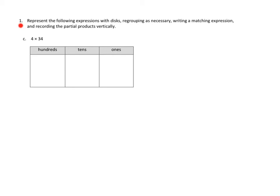I'm going to do two problems today. In each case, I've chosen the most difficult of the problems, so for number one, I'm choosing C. The directions say: represent the following expression with disks, regrouping as necessary, writing a matching expression, and recording the partial products vertically. It's a whole mouthful, and a lot of this will be brand new to students who, like me, were educated in a different era of math education. I think you'll see what the logic is to some of what we're doing here.